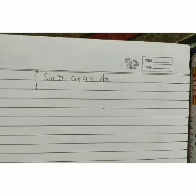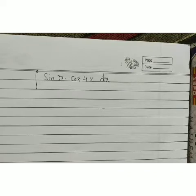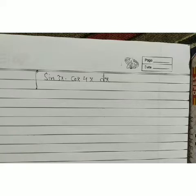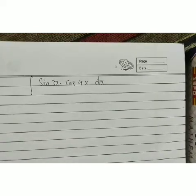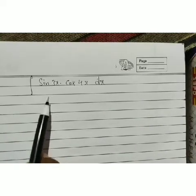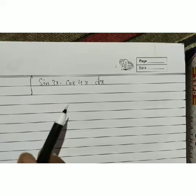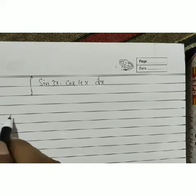Now we move to our next problem. We have a product of two functions: sin 3x and cos 4x. We need to find the integration of sin 3x · cos 4x. We can find this integration by using trigonometric basic identities.